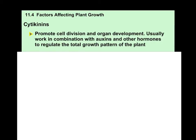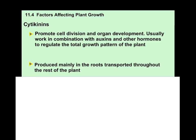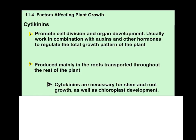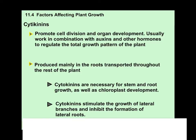Cytokinins promote cell division and organ development. They usually work in combination with auxins and other hormones to regulate the total growth pattern of the plant. They're produced mainly in the roots but are transported throughout the rest of the plant through the veins. They are necessary for stem and root growth as well as chloroplast development — growing more chloroplasts supports more photosynthesis and energy for the plant. Lastly, they are used to stimulate the growth of lateral branches and inhibit the formation of lateral roots.